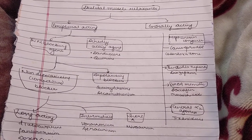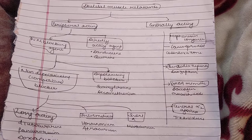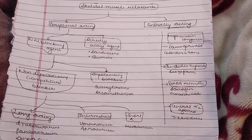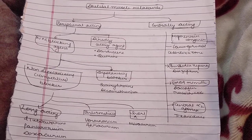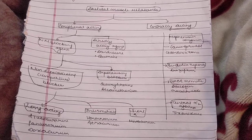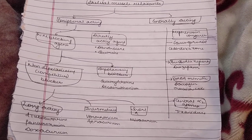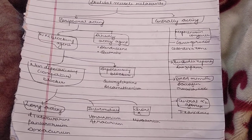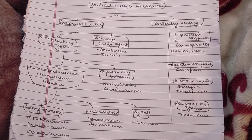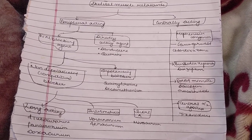Peripherally acting agents include neuromuscular blocking agents and directly acting agents. In directly acting agents, we have dantrolene and quinine. Neuromuscular blocking agents are further divided into non-depolarizing blockers and depolarizing blockers.